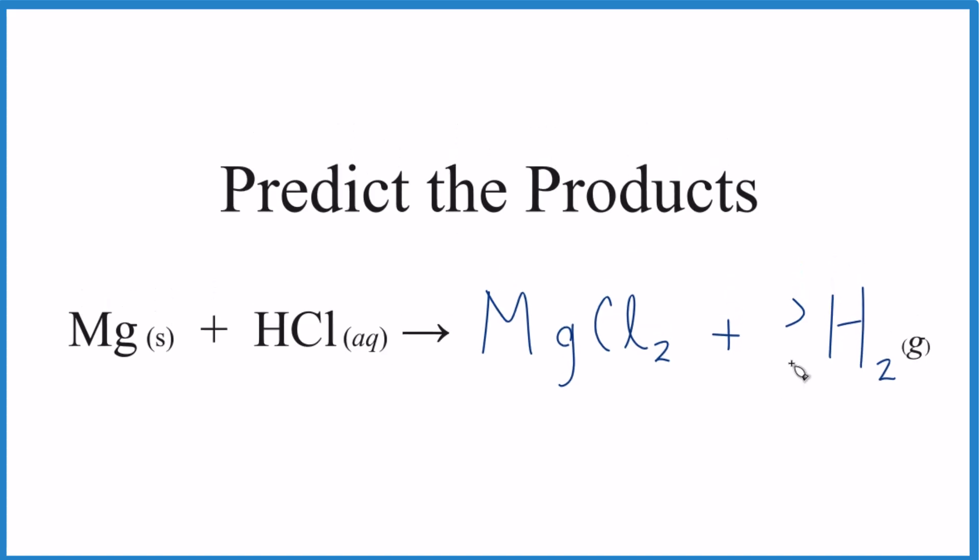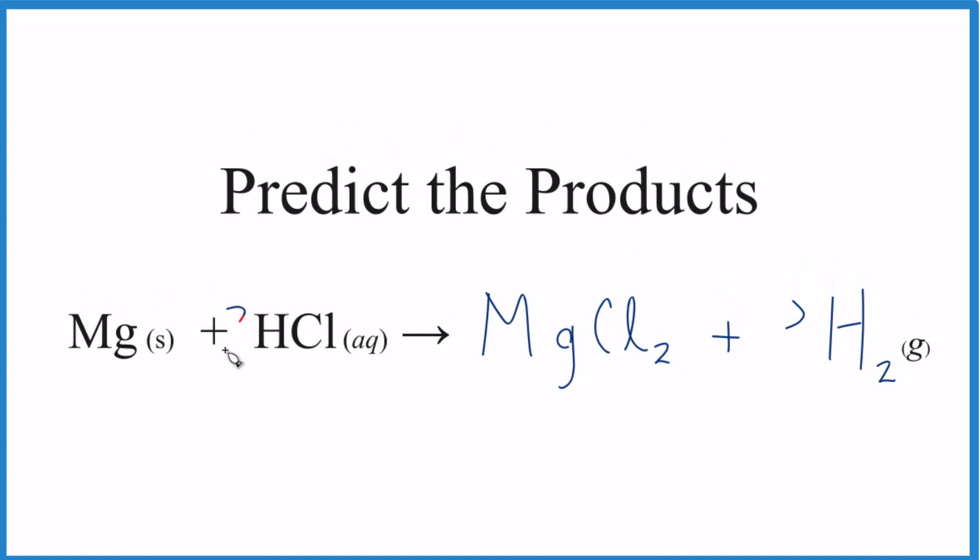This isn't balanced. If we wanted to balance it, we have two chlorines here, so let's put a two here. Now we have two times one, two of those, two hydrogens, and magnesium.